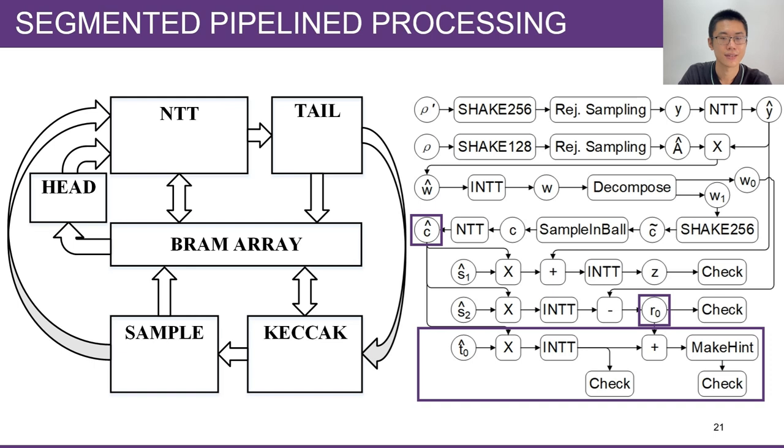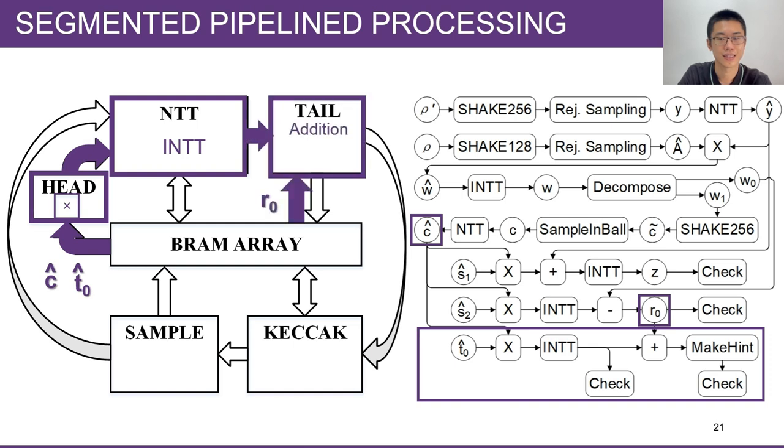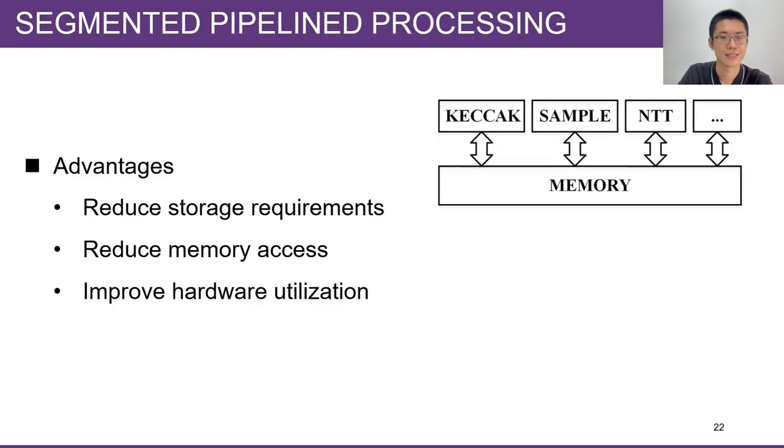c-hat times t0-hat in the HEAD module, iNTT in the NTT module, and the addition is done in the TAIL module. The result is checked for the rejection condition and used to make hint in the TAIL module. This is how the segmented pipeline processing method works.